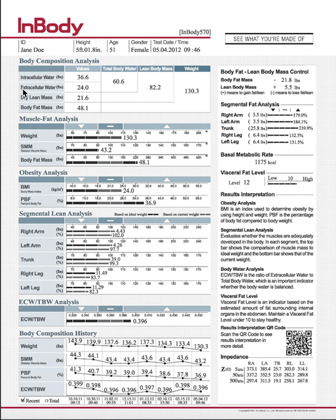Your extracellular water is what's outside your muscle cells — in your bloodstream and just as extra water weight in your body. This is the number that fluctuates a lot if you're really bloated, carrying extra water weight, or really dehydrated. When you see your weight fluctuate a lot on a daily basis, it's usually this extracellular water weight number.